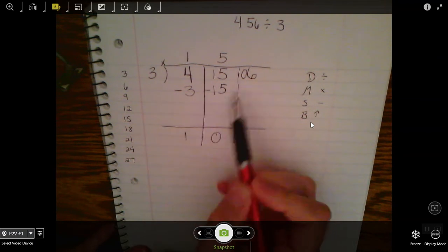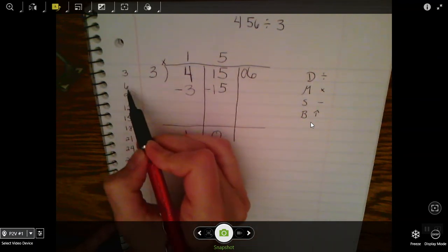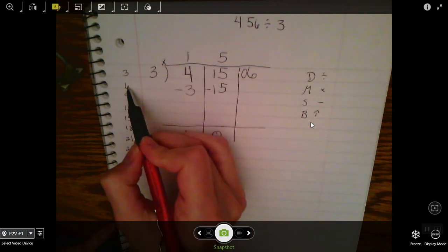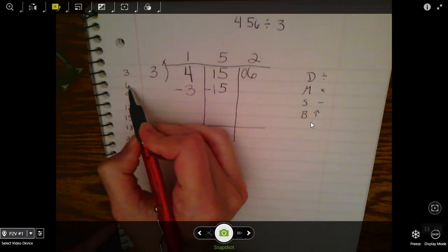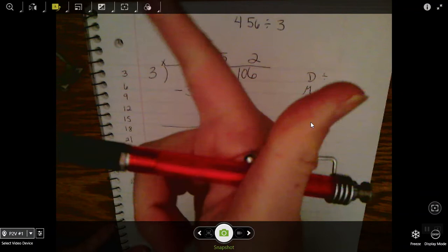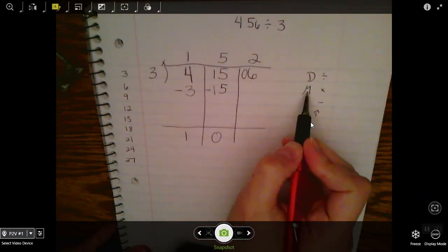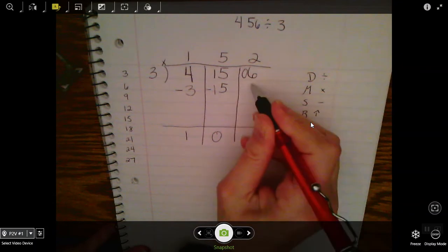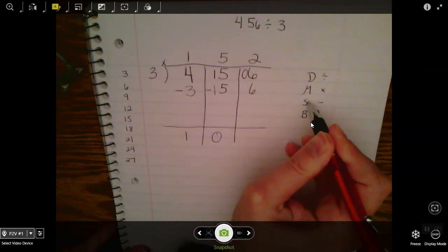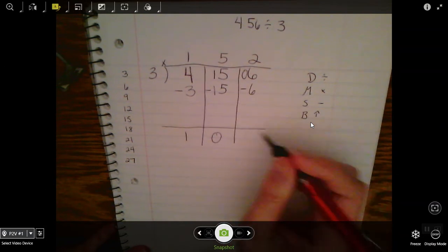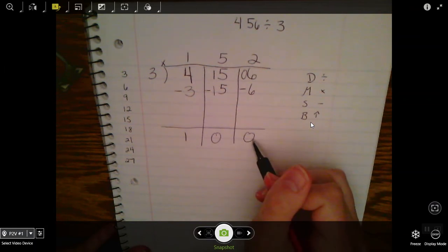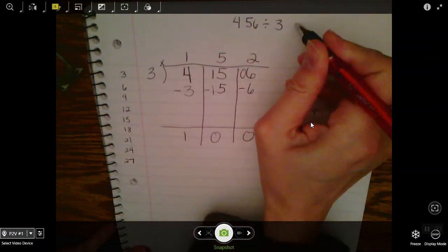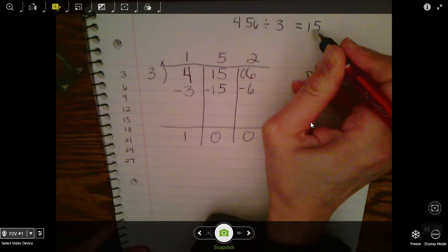How many times can 3 go into 6? It goes in 2 times. Next I multiply: 3×2 is 6. I subtract: 6-6 is 0. I have nothing else to bring up, so I'm done. I have no remainder because I have a 0 here, so here's my answer: 152.